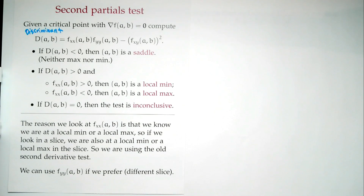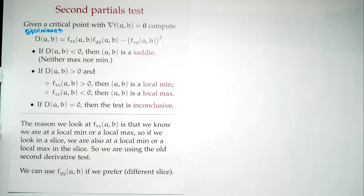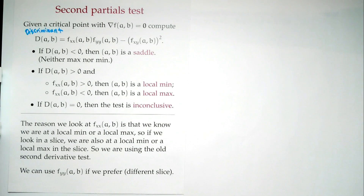The key idea: you know you're at a local min or local max — that's extra information. In the first derivative test we didn't know if one direction was enough; now we're guaranteed it's a min or max. So we just look in a slice: if it's a min on the surface, slicing still shows a min. We're essentially using the Calc 1 second derivative test — if the second derivative is positive, the curve is concave up (minimum); if negative, concave down (maximum).